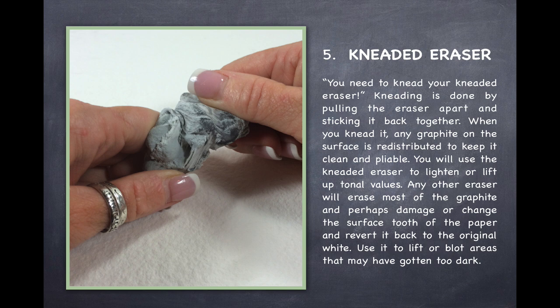You will use your kneaded eraser to lighten or lift up tonal values. Any other eraser will erase most of the graphite and perhaps damage or change the surface tooth of the paper and revert it back to the white of the paper. Use this kneaded eraser to lift or blot areas that may have gotten too dark. It's a great tool and remember you need to knead your kneaded eraser.